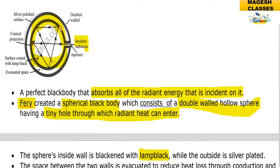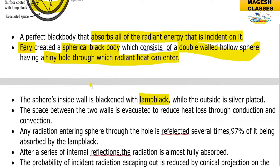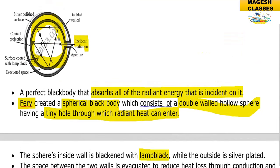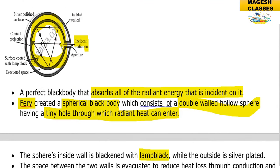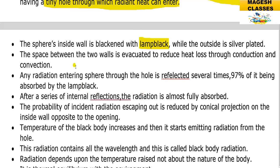The outside of the sphere is silver-plated. The space between the two walls is evacuated to reduce heat loss through conduction and convection. Any radiation entering the sphere through the hole is reflected several times, with 97% of it being absorbed by the lamp black. After a series of internal reflections, the radiation is almost fully absorbed.